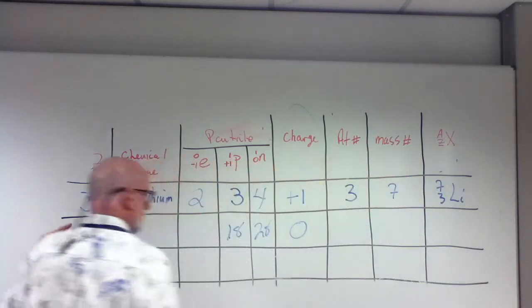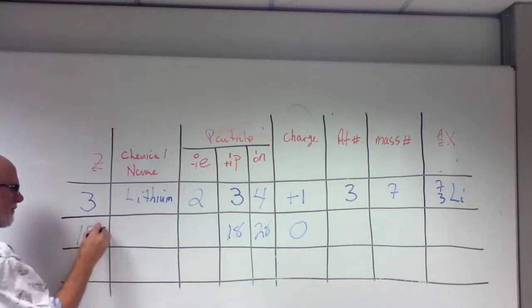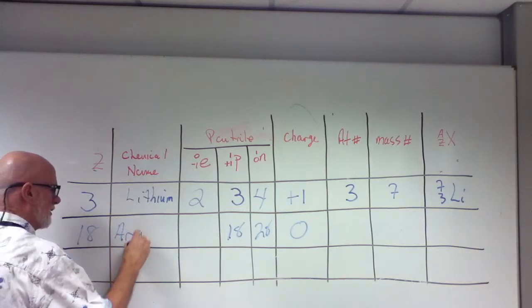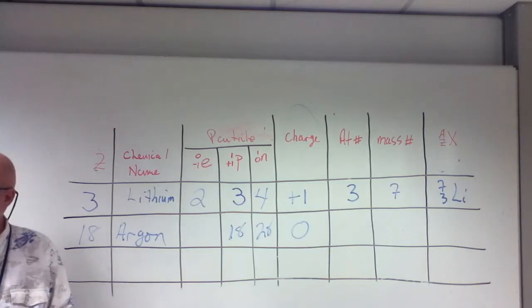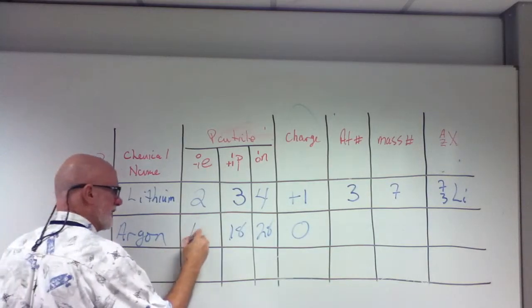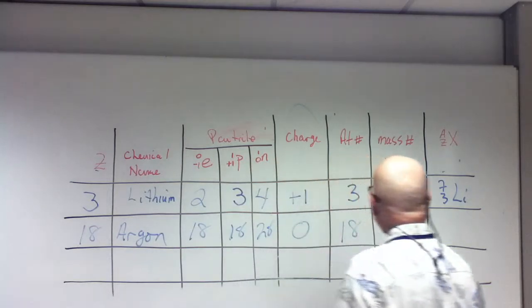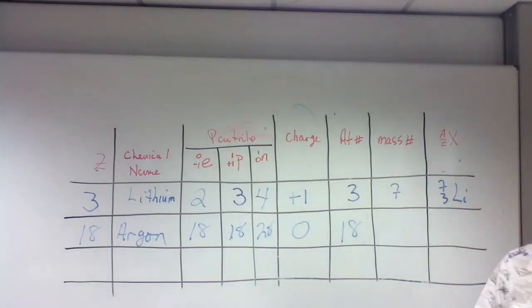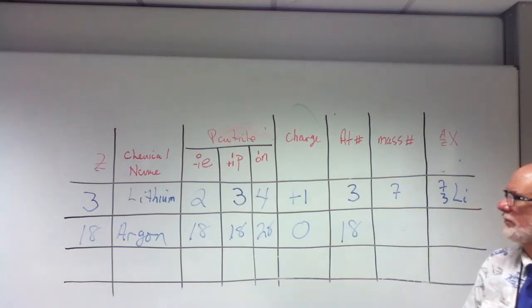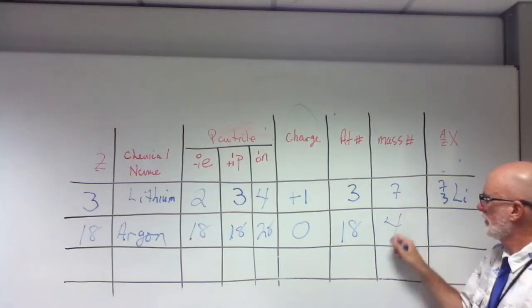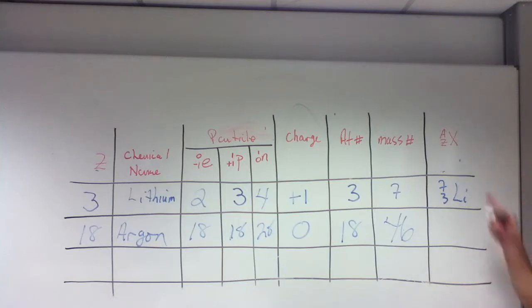What's Z going to be? 18. What's the name of this? Argon. Argon. What is the number of protons, the number of electrons? 18, 18. What about the atomic number? 18. What about the mass number? 46. 18 plus 28, 46. And the notation? 46 over 18.